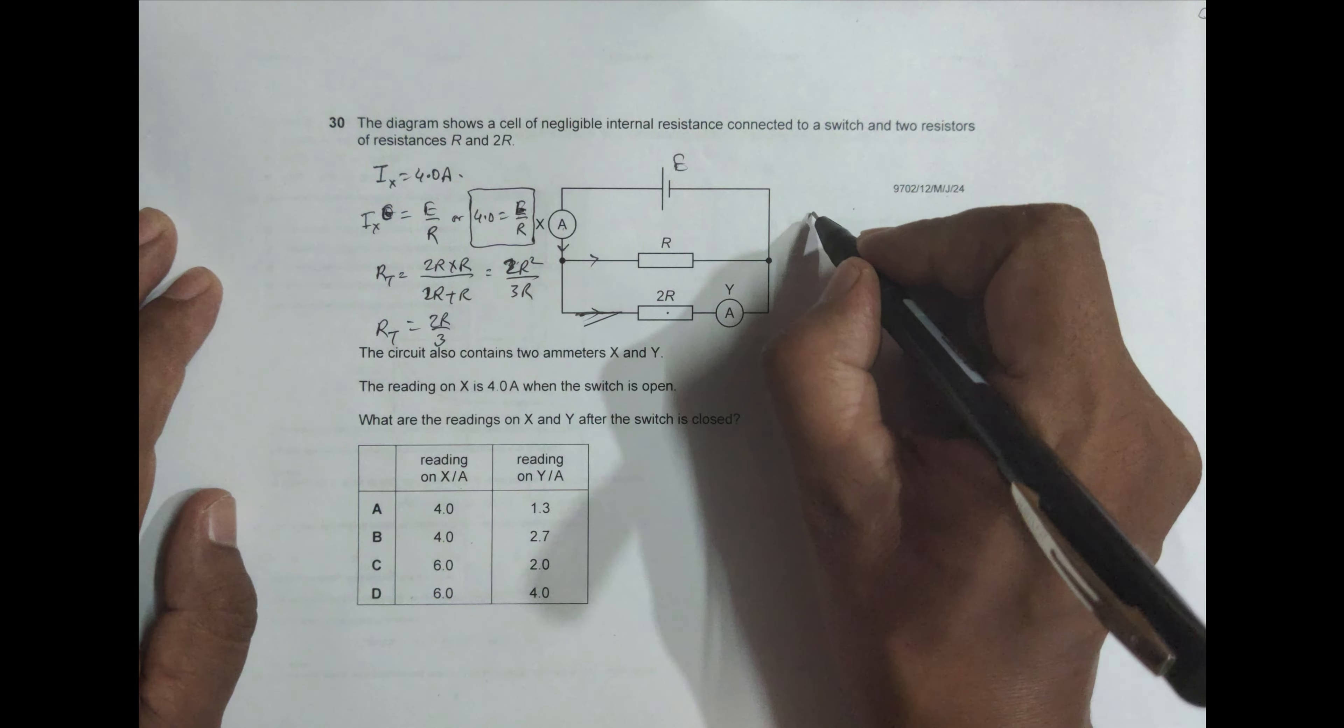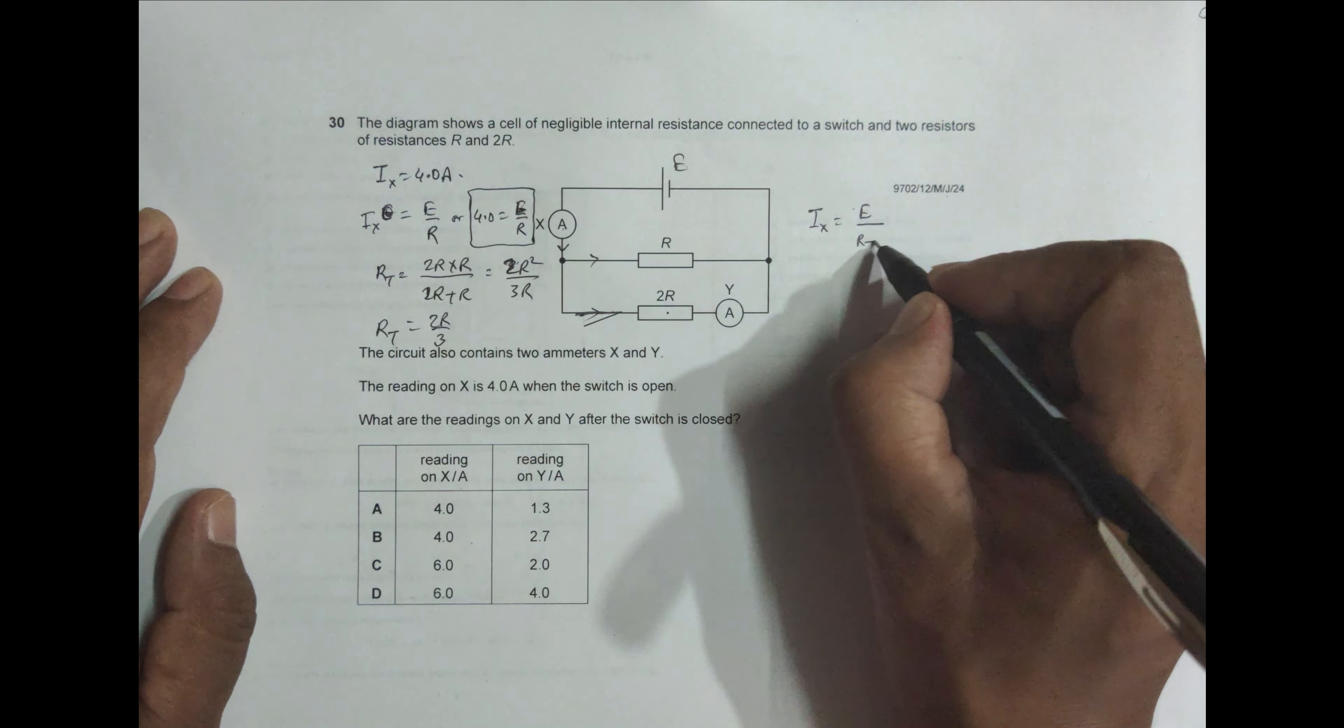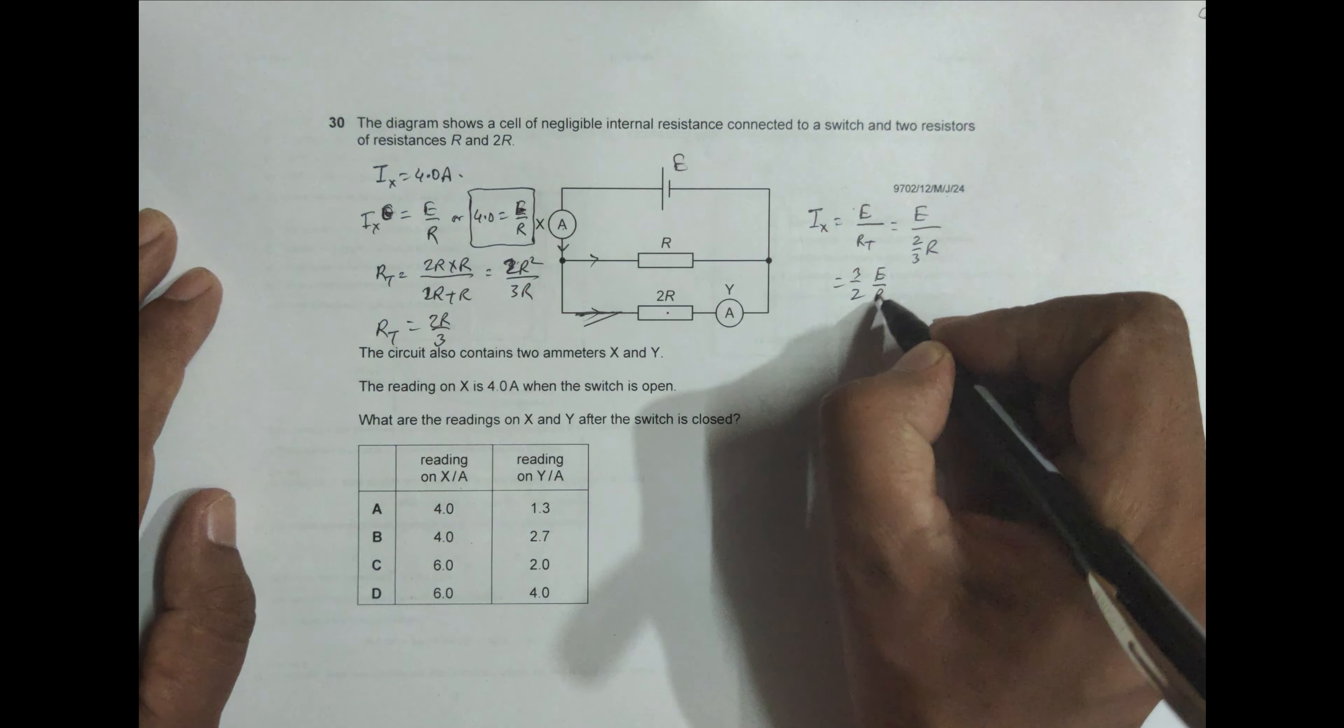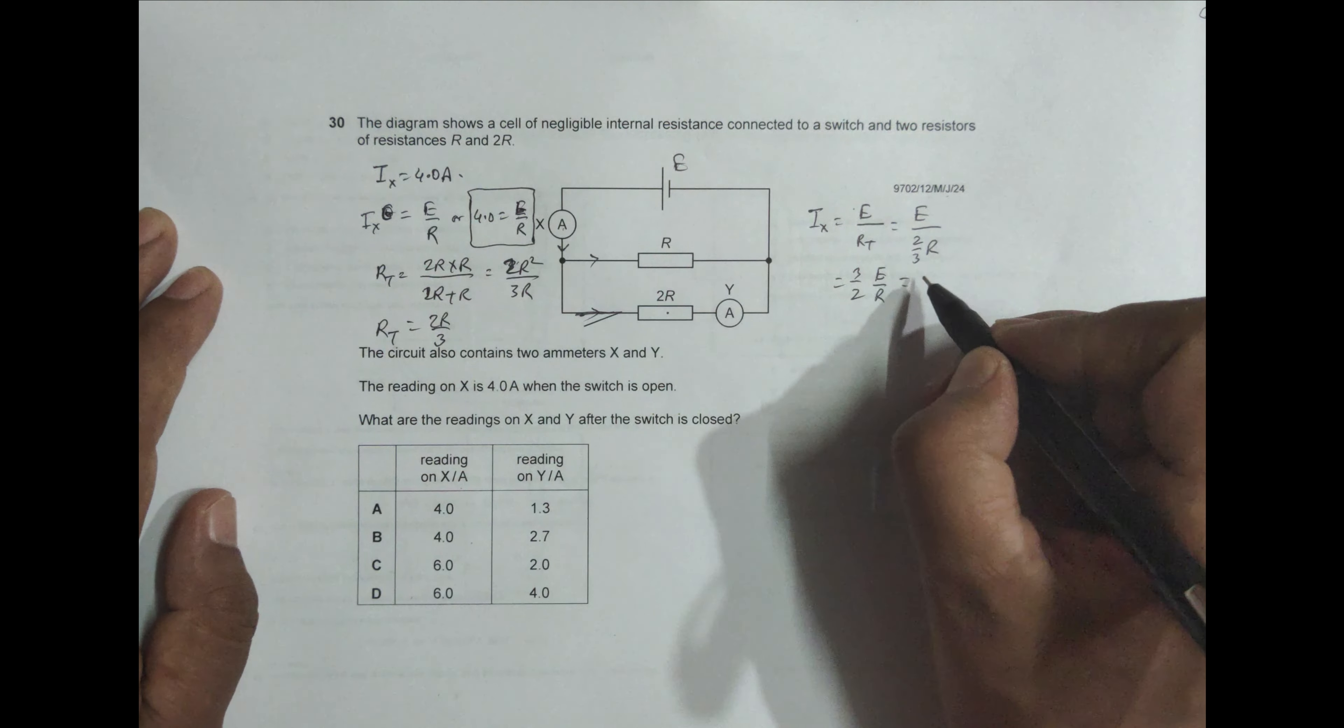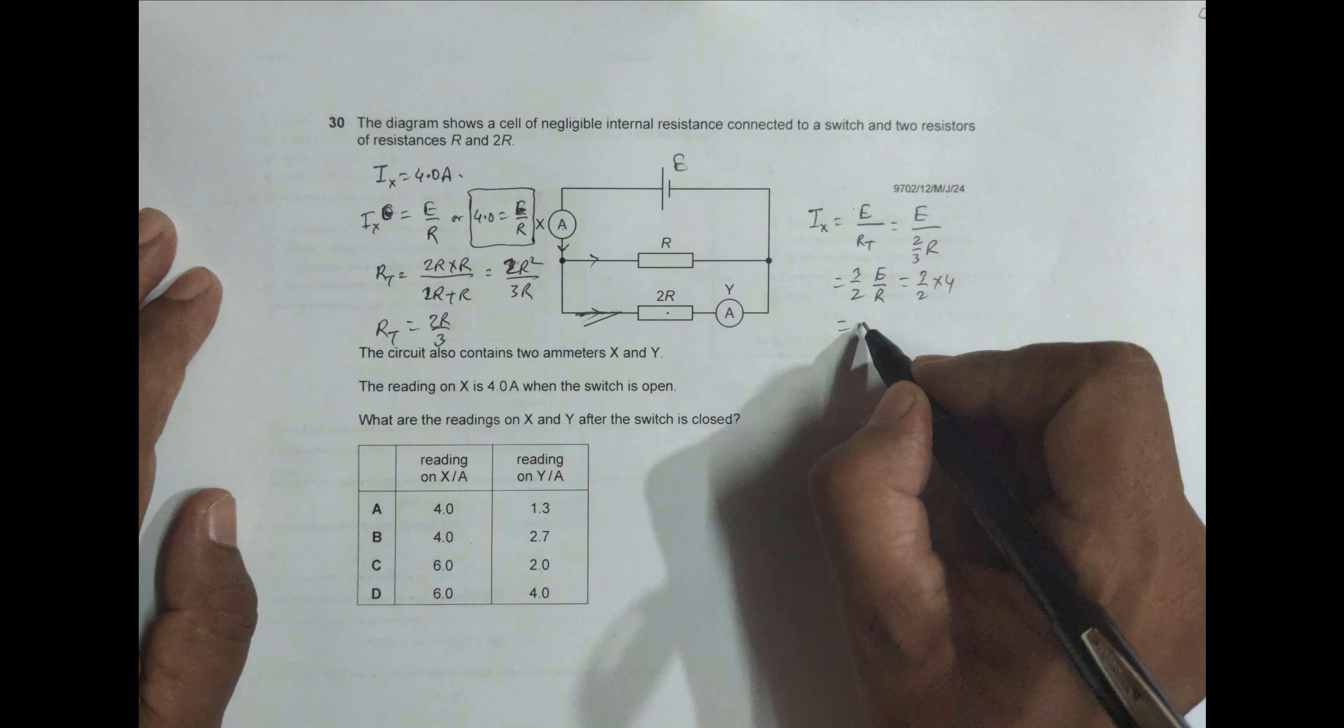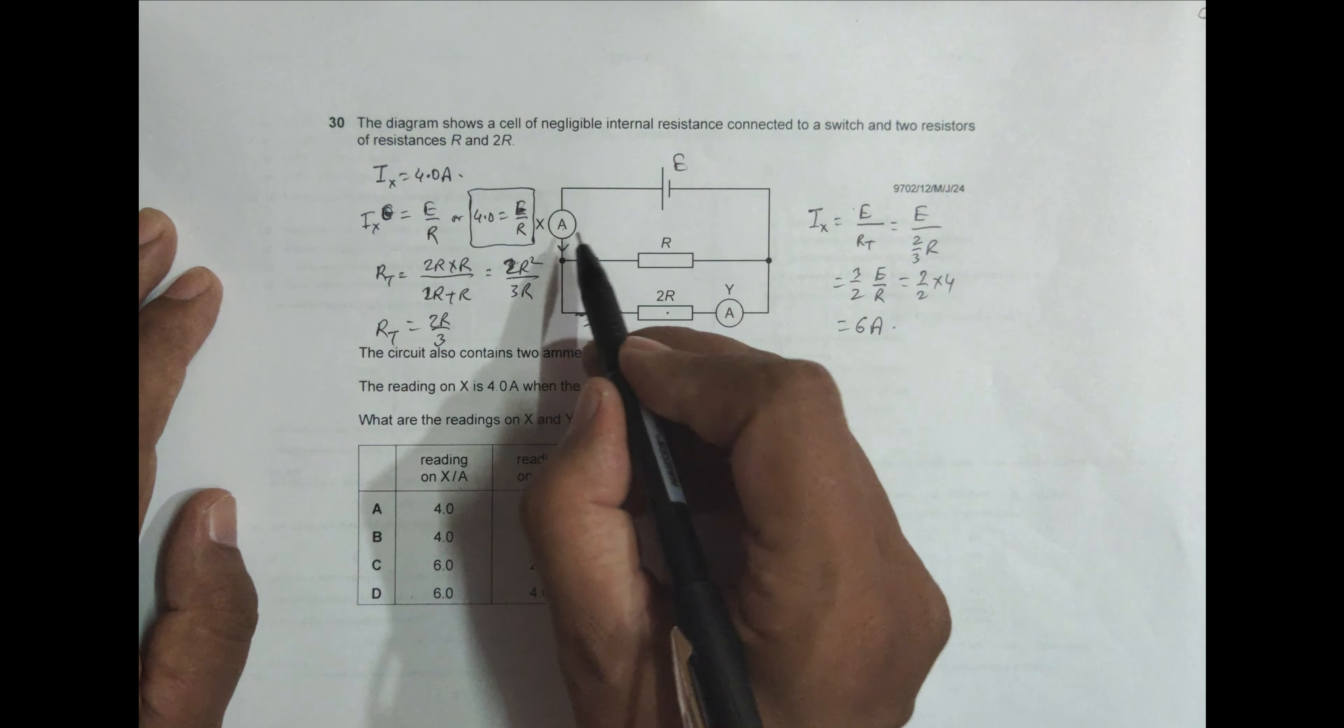Now the new current in the circuit, I_X, is equal to E divided by the total resistance which is R_T. So that's equal to E by 2 by 3 R, that's equal to 3 by 2 then E by R. And the value of E by R has been declared as 4.0, so it's 3 by 2 into 4 equal to 6. So this I_X is equal to 6 Ampere.